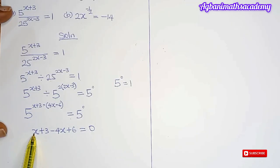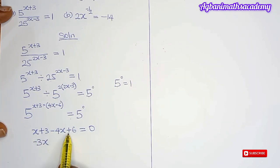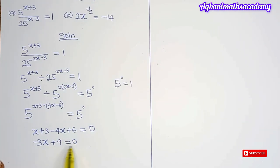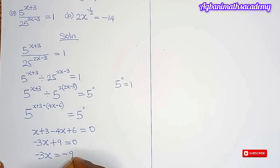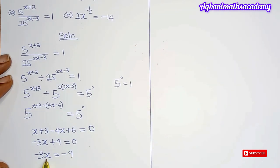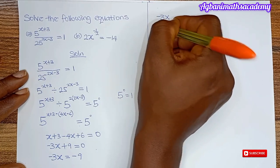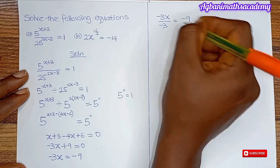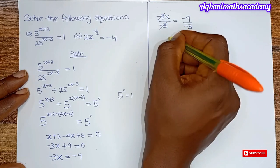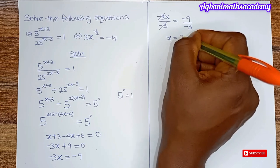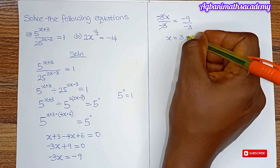When you have the same base on both sides, you equate the powers. So we have x plus 3 minus 4x plus 6 equals 0. Bringing like terms together: x minus 4x gives minus 3x, and 3 plus 6 gives plus 9, so minus 3x plus 9 equals 0. Moving plus 9 to the right gives minus 3x equals minus 9. Dividing both sides by minus 3, x equals 3.